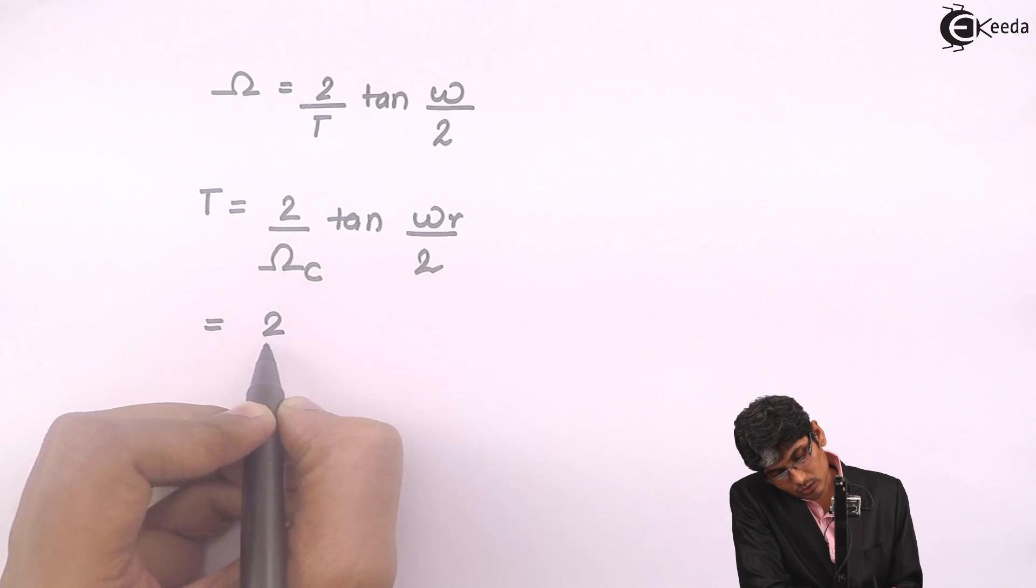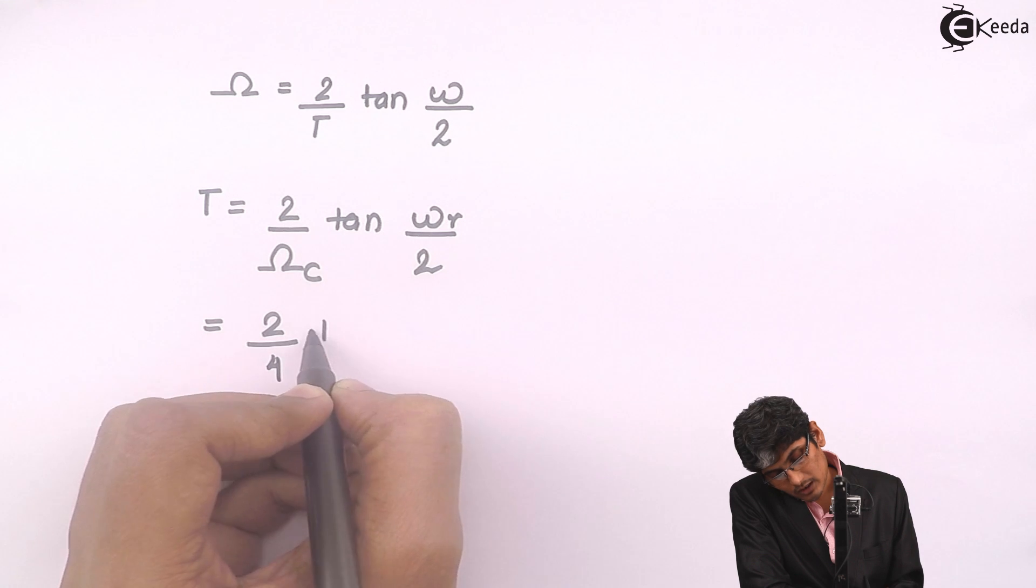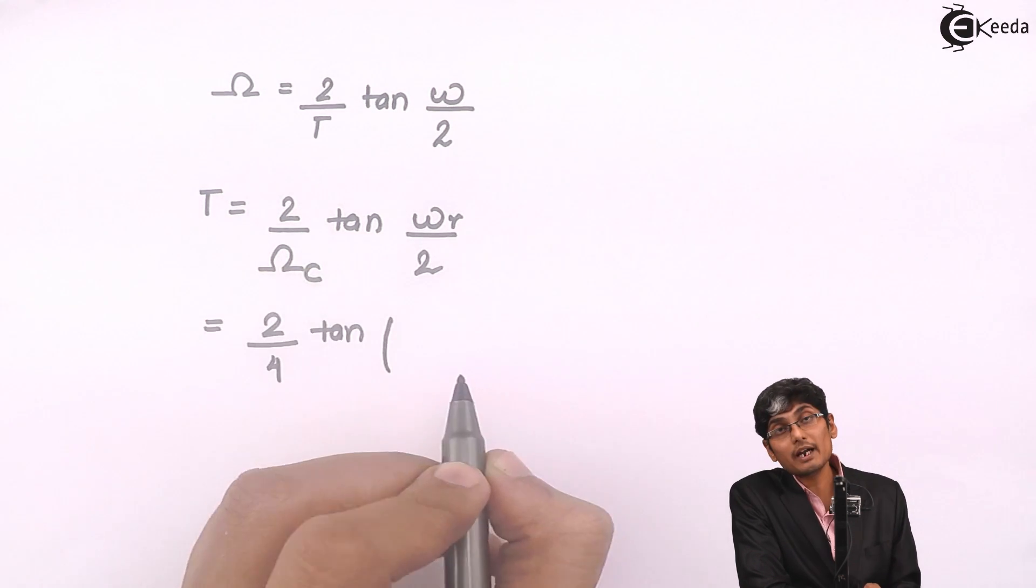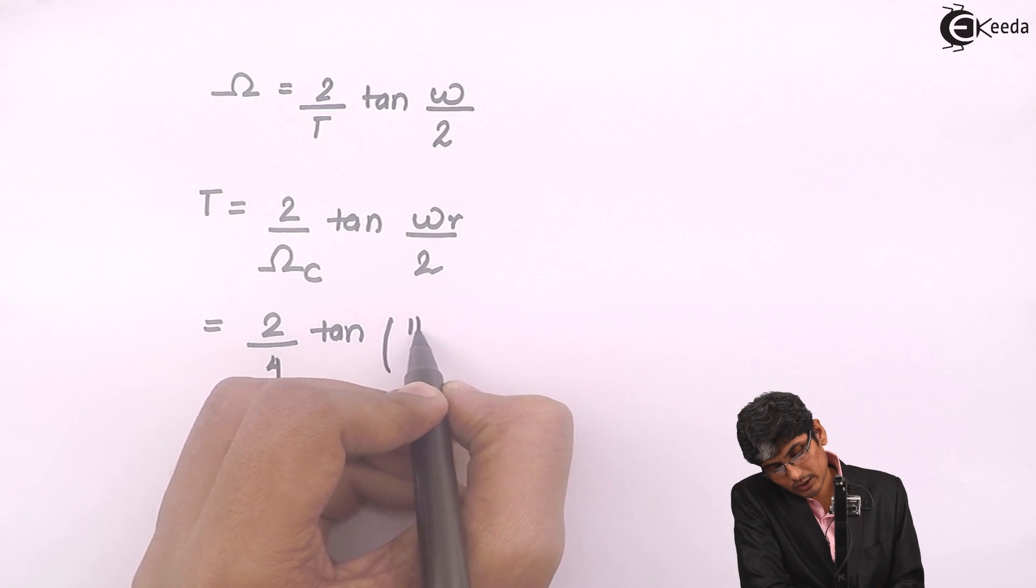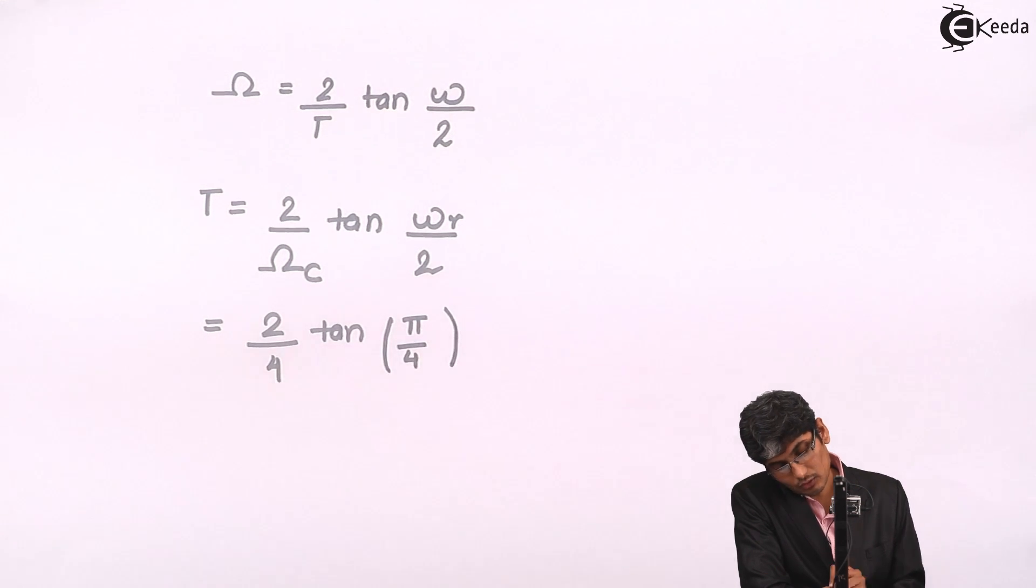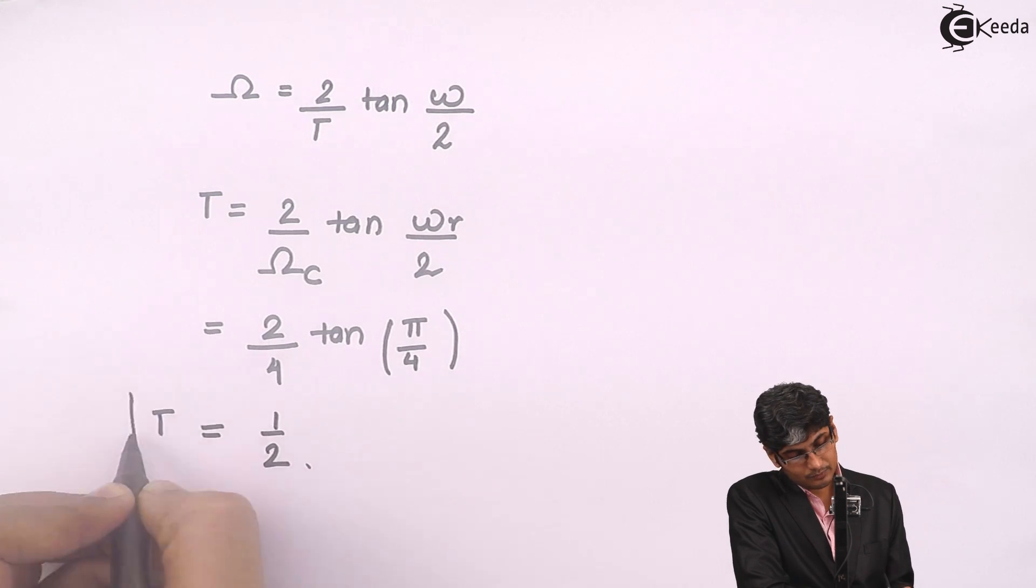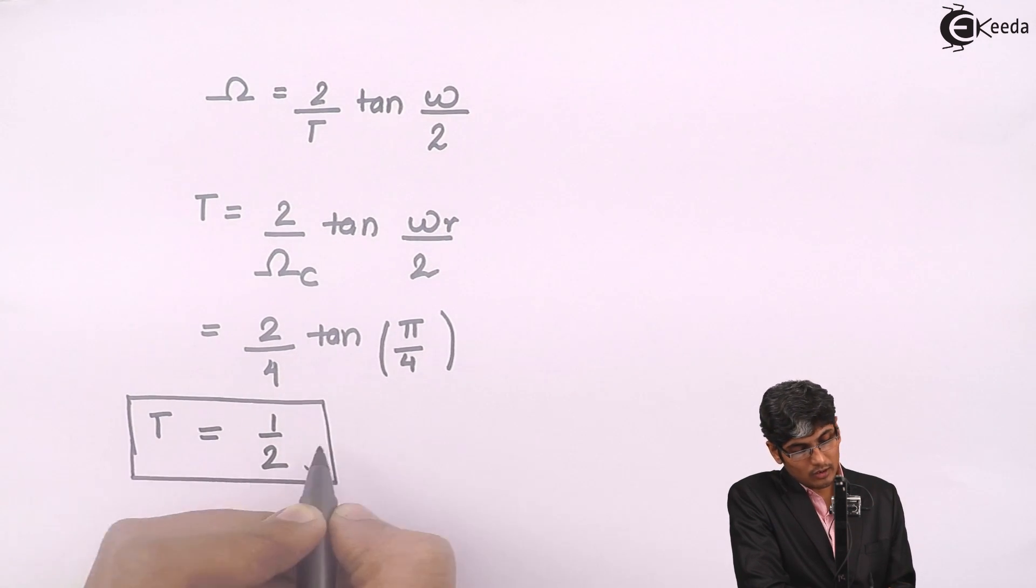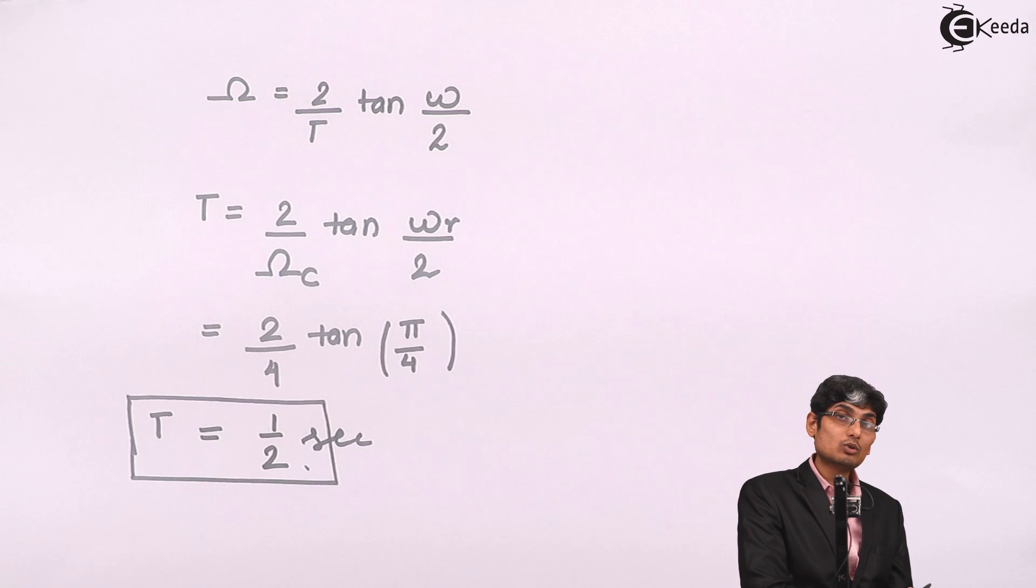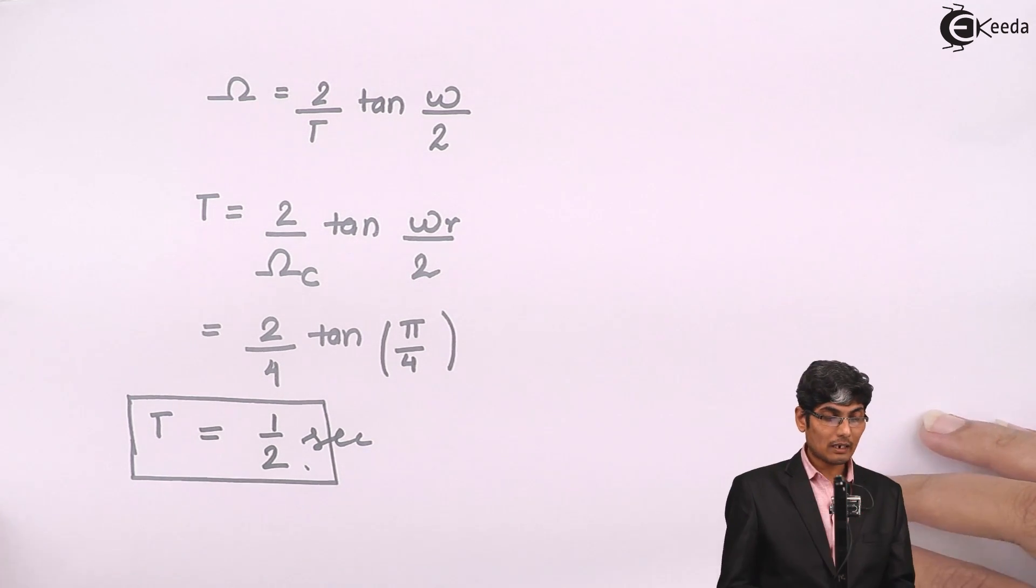So that will give me 2 upon 4 tan of, here it is pi by 2, so I am going to get pi by 4. Because the given omega R is pi by 2, so I am going to get pi by 4. So that T is 1 by 2. So I got capital T as 1 by 2 seconds. So we got capital T.